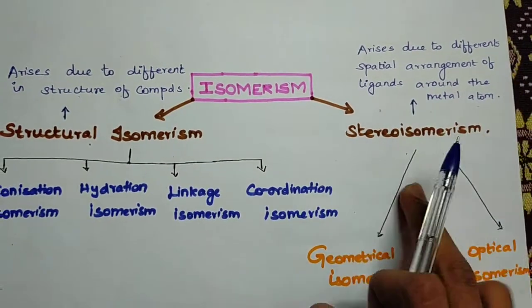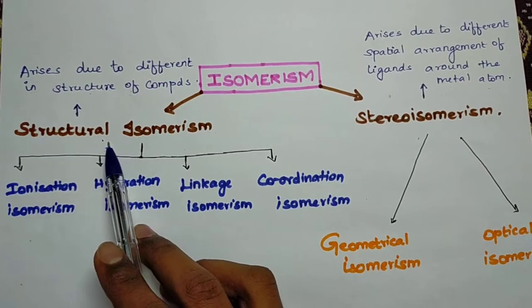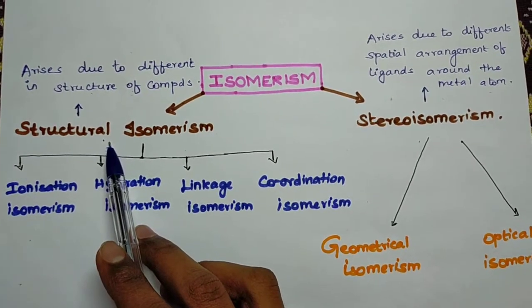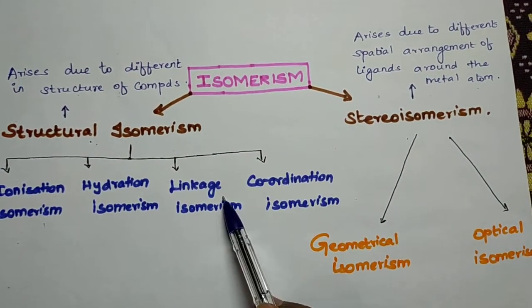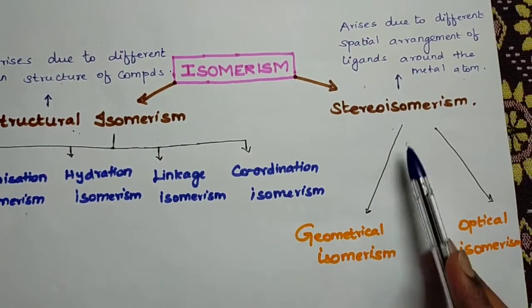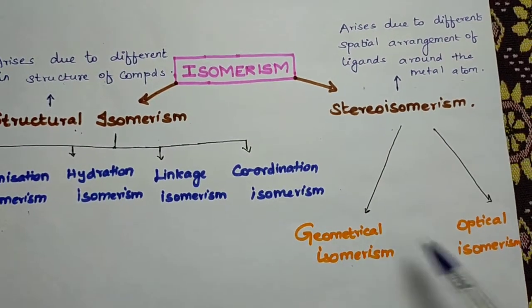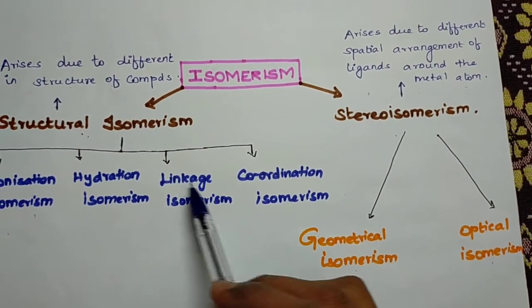Isomerism is mainly of two types, just as in organic chemistry: structural isomerism and stereo isomerism. Types of structural isomerism include ionisation isomerism, hydration isomerism, linkage isomerism, and coordination isomerism. For stereo isomerism there is geometrical and optical isomerism.